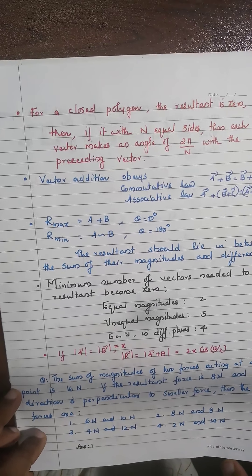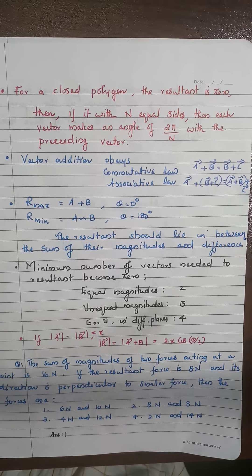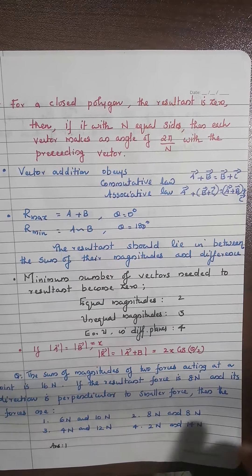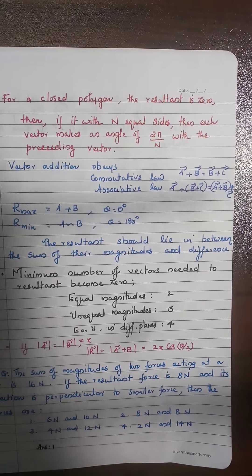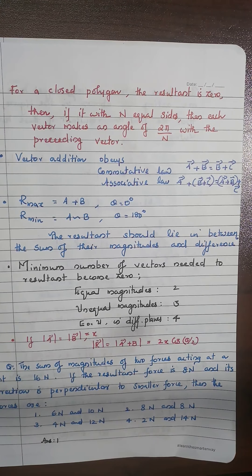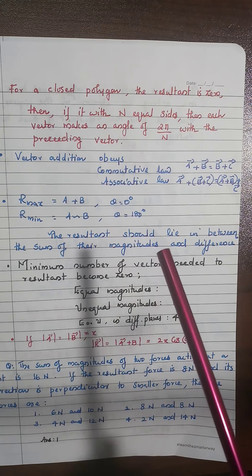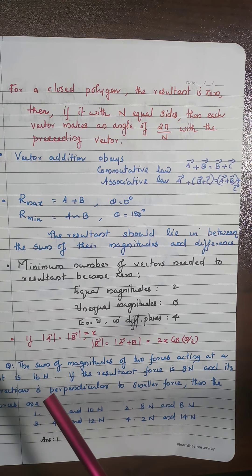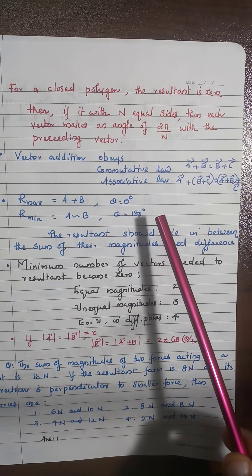Some very important examination concepts: for a closed polygon, the resultant is zero — that is a very important point. If it has n equal sides, each vector makes an angle of 2π/n with the preceding vector. For example, for a square (n = 4), the angle is 2π/4 = 90 degrees. Also keep in mind that vector addition obeys the commutative law and the associative law.